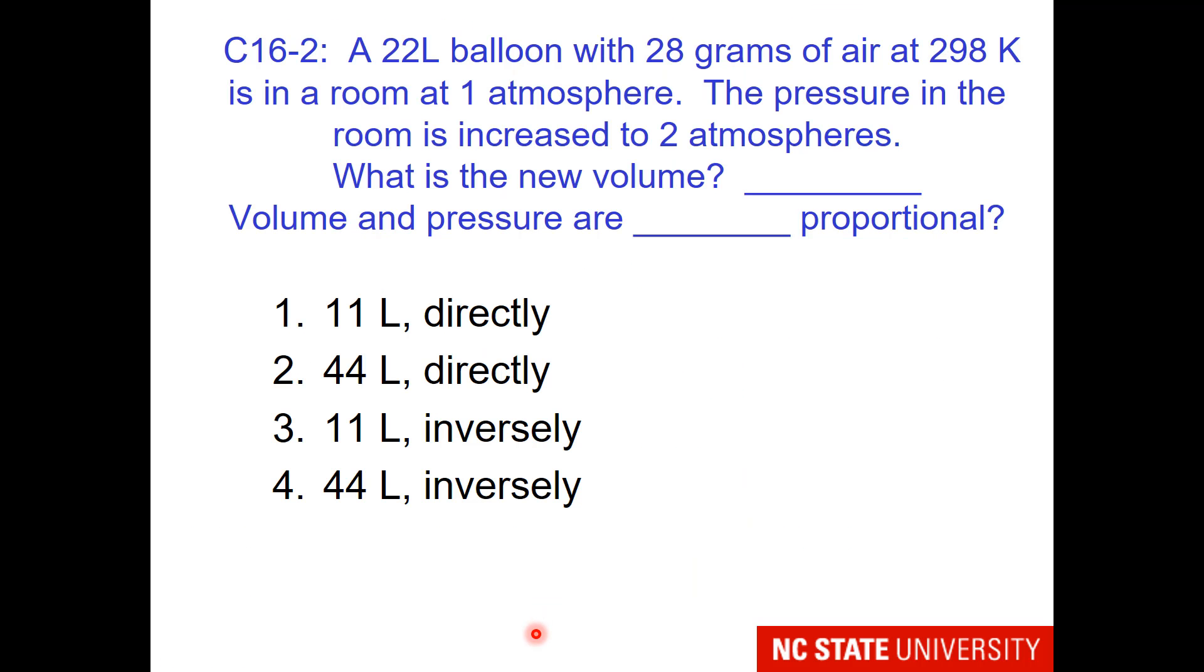Here is a question for you. A 22-liter balloon with 28 grams of air at 298 Kelvin, which is approximately the temperature of a typical room, is in a room at 1 atm. The most incredible high-pressure system comes by, and the pressure in the room is increased to 2 atm. What is the new volume of the balloon, and how are volume and pressure related?